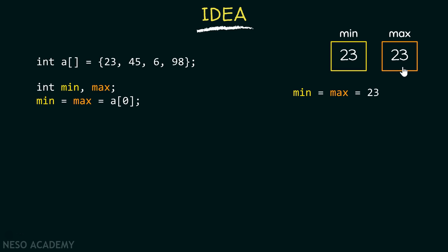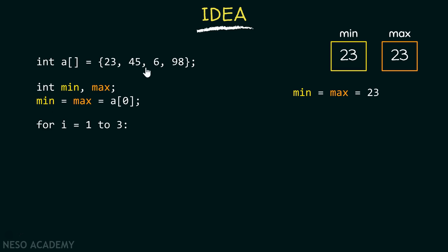For the purpose of finding the minimum and maximum value of this array, we need one for loop which goes from index one to three — the last index of this array. I am starting from index one because I have already initialized the min and max variables with the first element. I want to compare the rest of the elements with the first element, so there is no point comparing 23 with 23.